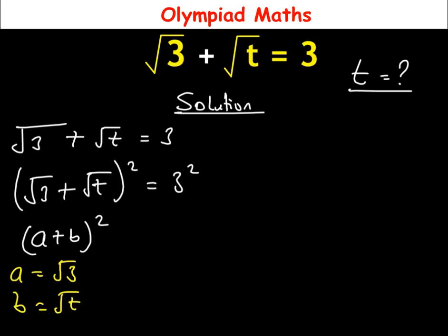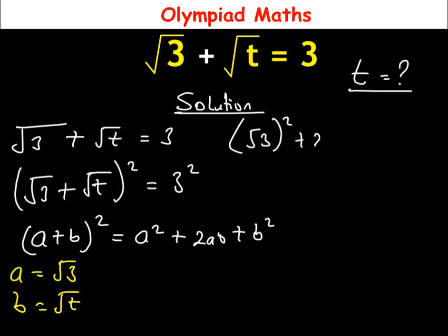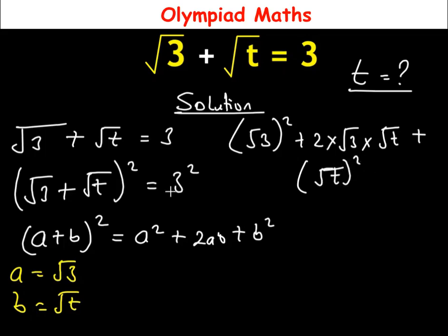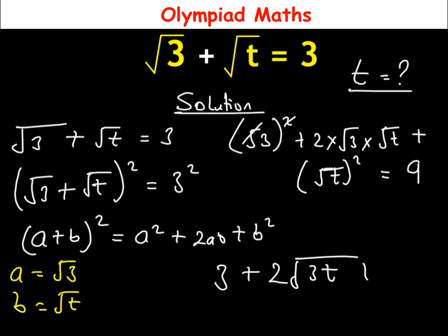And the value of b is equal to √t. Once you have (a + b)², this is equal to a² + 2ab + b². So expanding (√3 + √t)² in this form, we have (√3)² + 2 × √3 × √t + (√t)², which equals 3². Cancelling square with square root, we have 3 + 2√(3t) + t = 9.